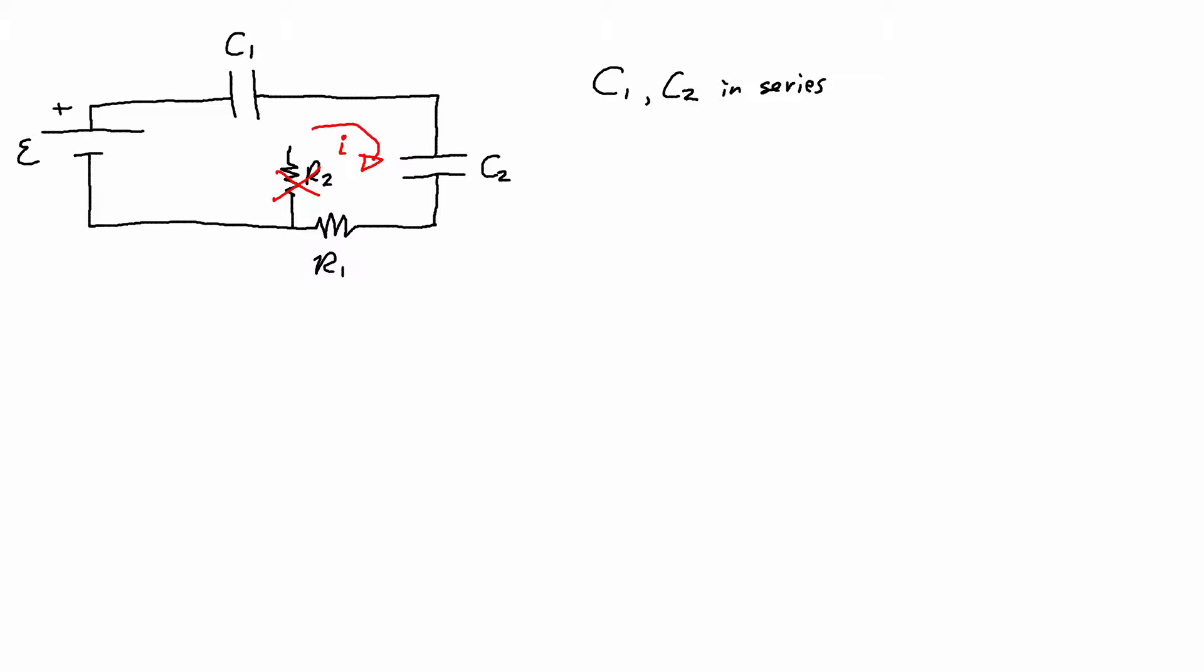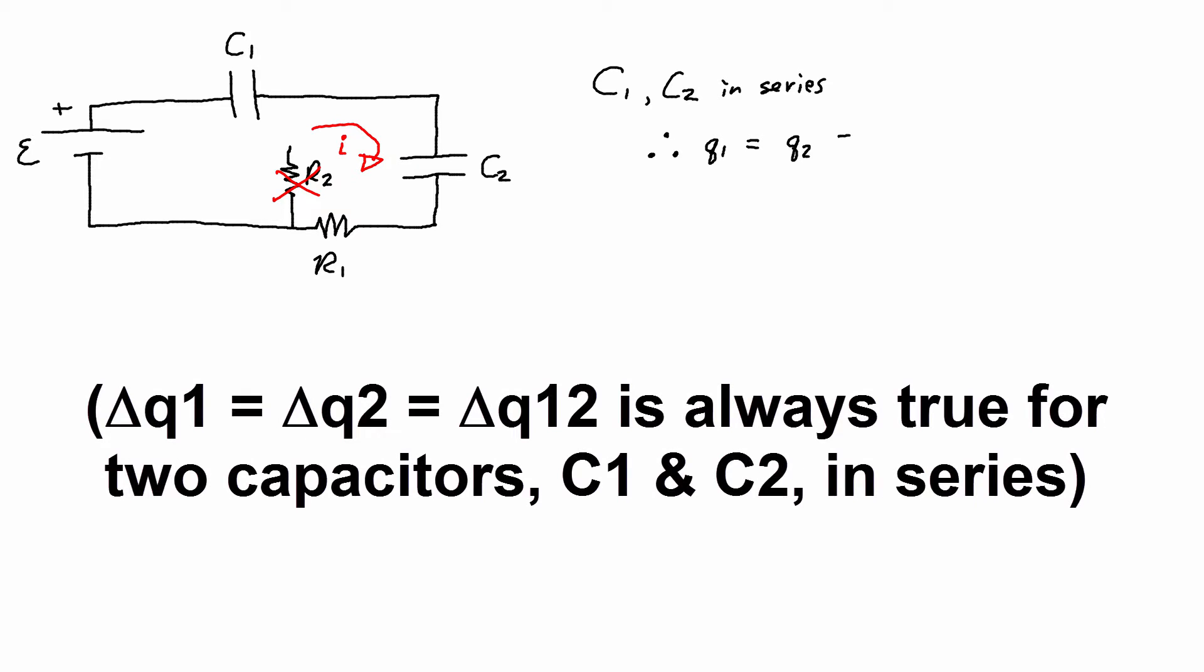Because C1 and C2 are in series that means that Q1 and Q2 are going to be the same thing because capacitors in series always have the same charge. Now that assumes that they start with the same charge when you say that. And I have another YouTube video that I'll link to in the description that actually explains a little bit why.